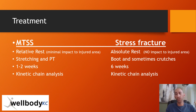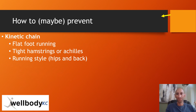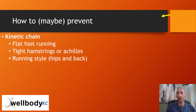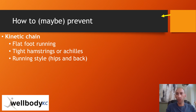Both conditions need a kinetic chain analysis before returning to sport to help prevent recurrence. The kinetic chain is how your body deals with the forces of impact from the ground up. It could be flat-footed running, ankle over-pronation, knees that are too valgus or pointing in, hips with too much internal or external rotation, or a back in the wrong position for good running technique. All of these things can result in shin splints or eventually a stress fracture.